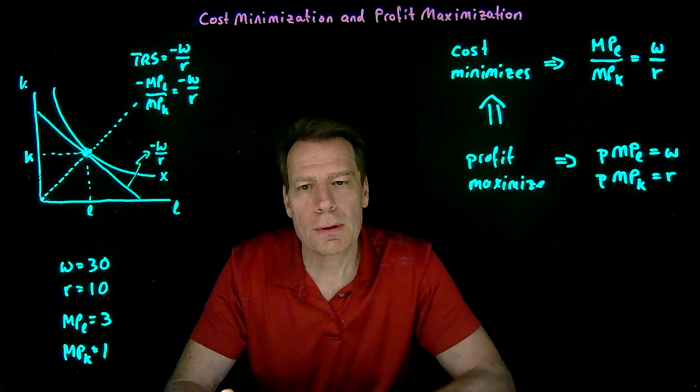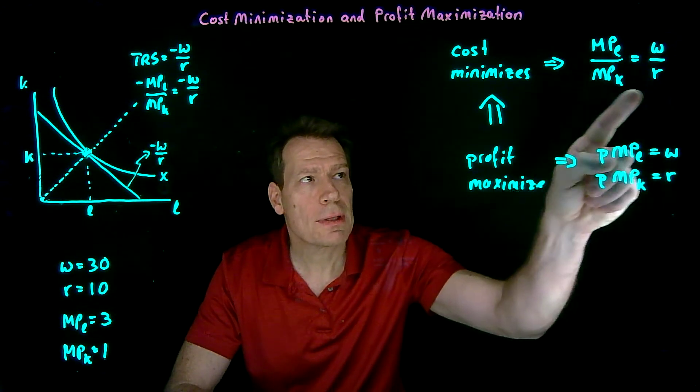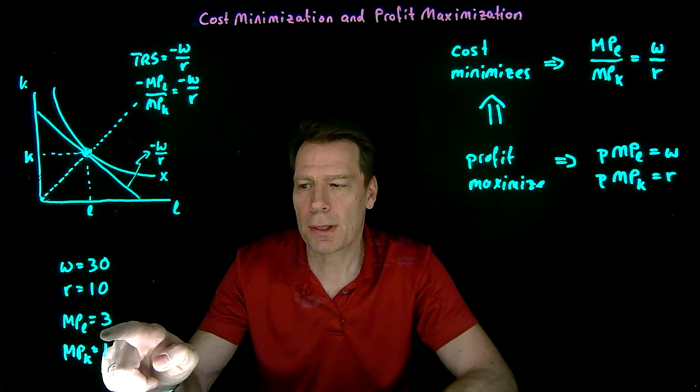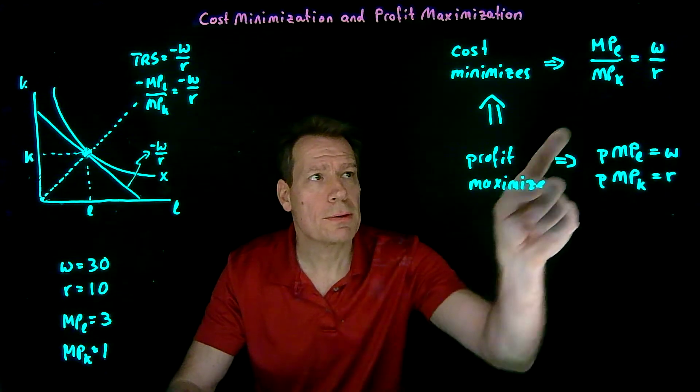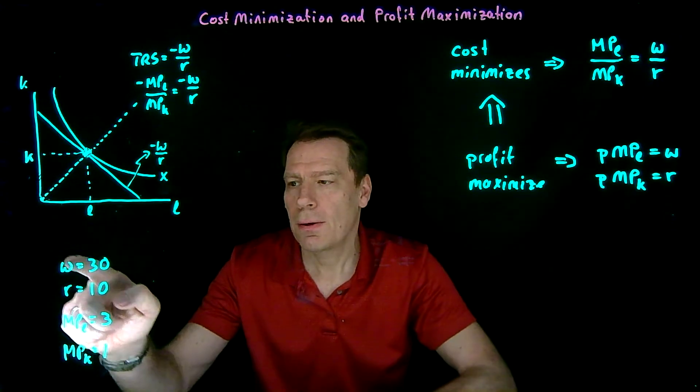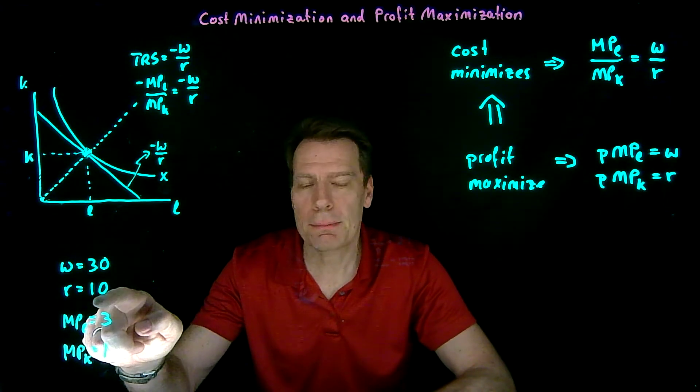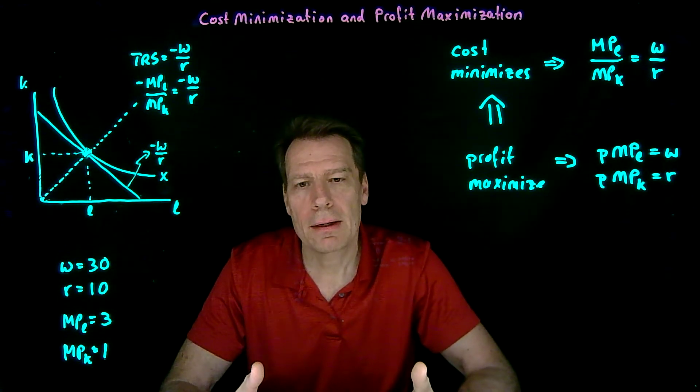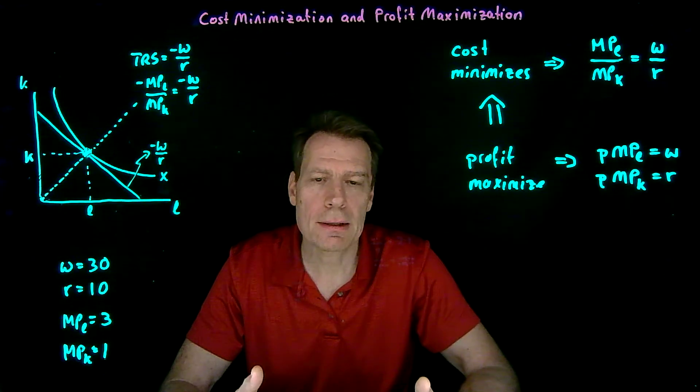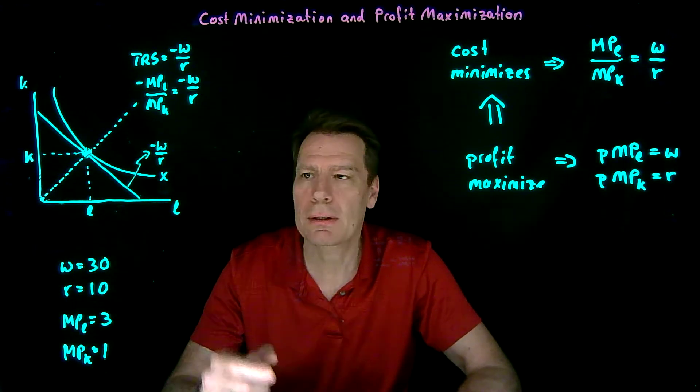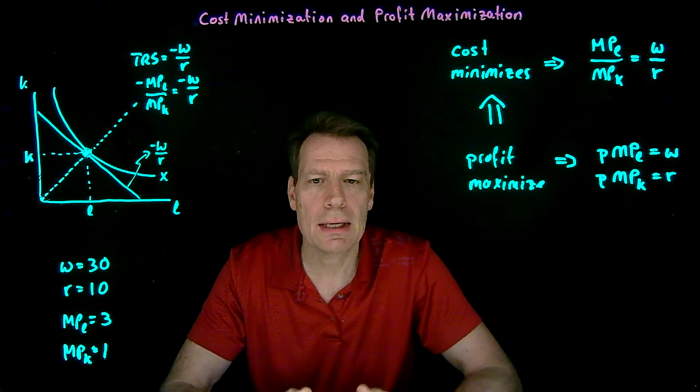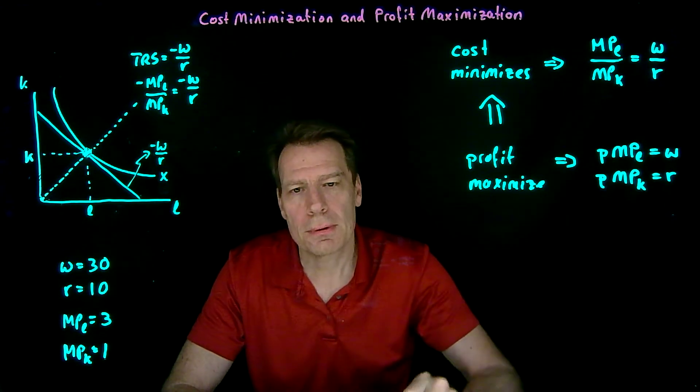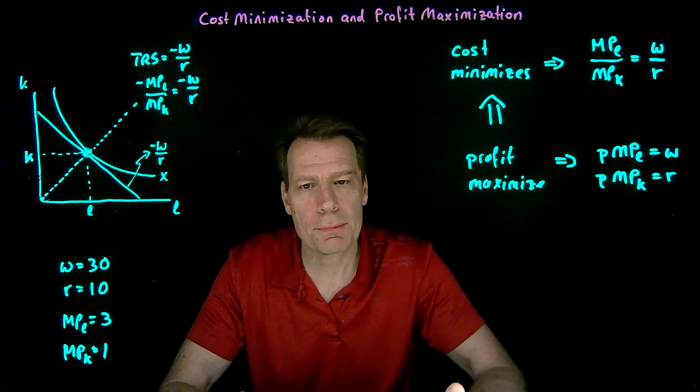If that's true, we can check whether we're cost minimizing. We can check whether this equation holds. Marginal product of labor divided by the marginal product of capital is 3 divided by 1, so that side is equal to 3. Wage over rental rate, 30 divided by 10, is also equal to 3. So this equation holds and we are, in fact, at a cost minimizing production plan. We're producing the quantity we're producing in the least costly way.